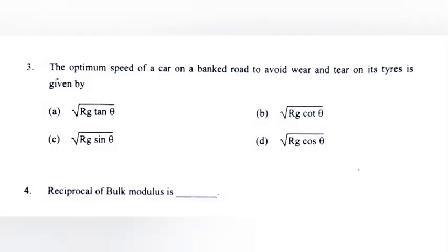Question 3: The optimum speed of a car on a banked road to avoid wear and tear on its tires is given by A. Route RG tan theta, B. Route RG cot theta, C. Route RG sin theta, D. Route RG cos theta. Answer: Route RG tan theta.